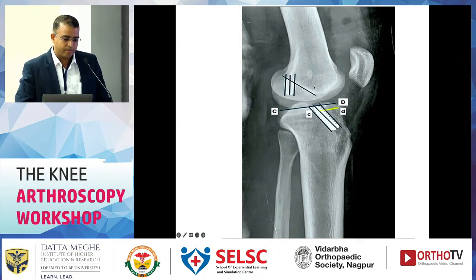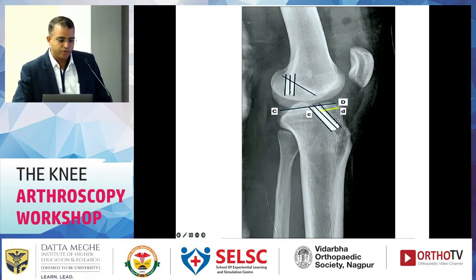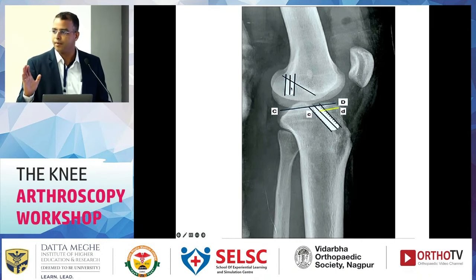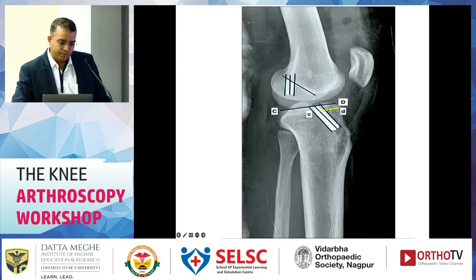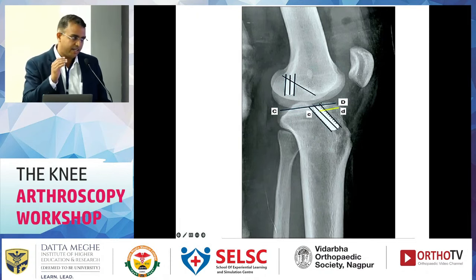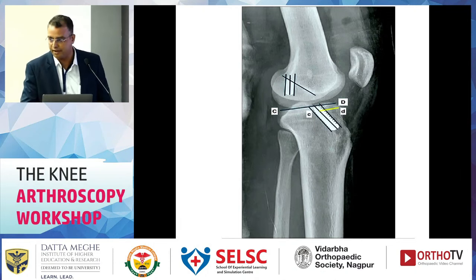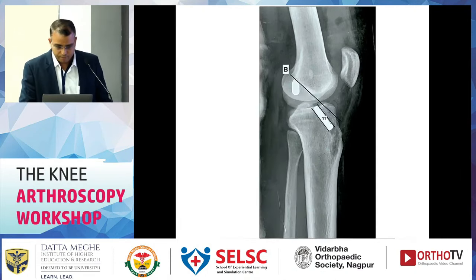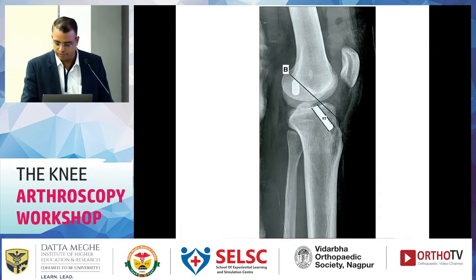On the lateral x-ray, drawing the Blumensaat line, the femoral tunnel entry should be in the proximal one-third portion of the Blumensaat line. For the tibia, extending the Blumensaat line, the intra-articular entry of the tibial tunnel should be posterior to the extension of the Blumensaat line — so there will be no impingement.